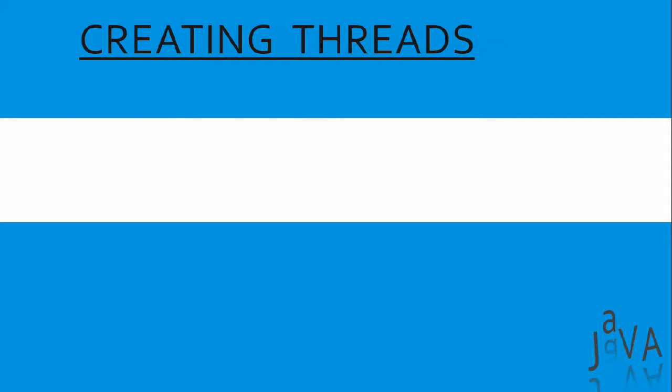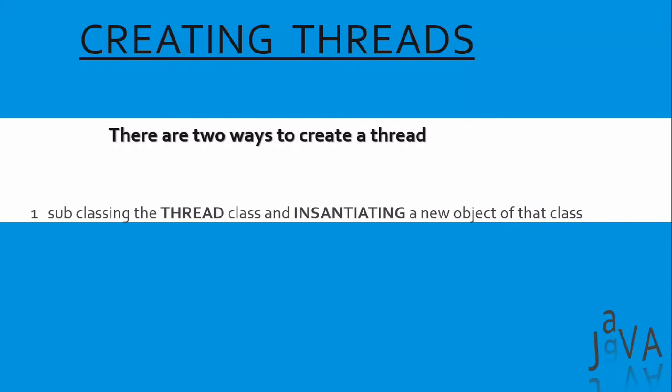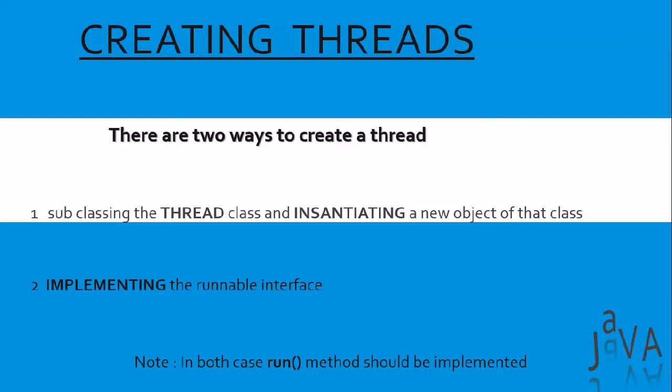Creating threads. There are two ways to create a thread. The first one is subclassing the Thread class and instantiating a new object of that class. The second is implementing the Runnable interface. In both cases, the run method should be implemented — remember that.